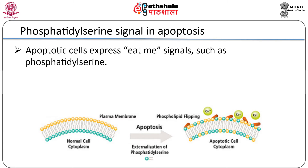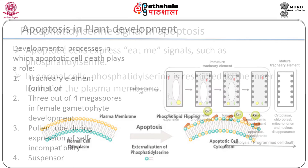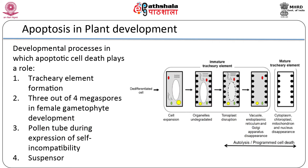In normal cells, phosphatidylserine is restricted to the inner leaflet of the plasma membrane. We will now talk about the gene regulation of programmed cell death and the molecular mechanism of programmed cell death.